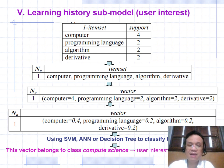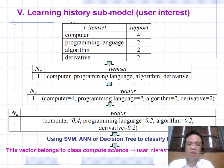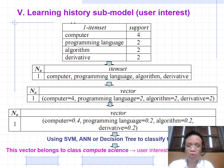From the search history, item sets are constructed: 1-item sets include Computer (4), Programming Language (2), Algorithm (2), Derivative (2). 2-item sets include {Computer, Programming Language}, {Algorithm, Derivative}. The resulting vector is: Computer 0.4, Programming 0.2, Algorithm 0.2, Derivative 0.2. Using SVM, ANN, or decision tree to classify this vector, it belongs to Computer Science — so the user's interest is Computer Science.